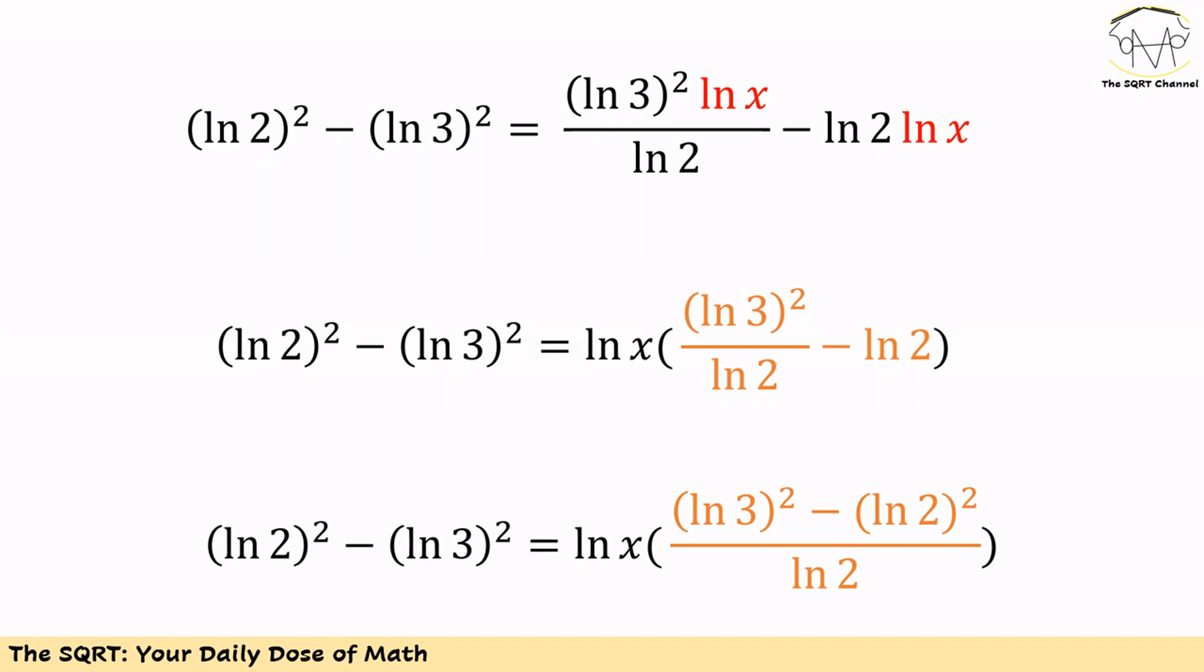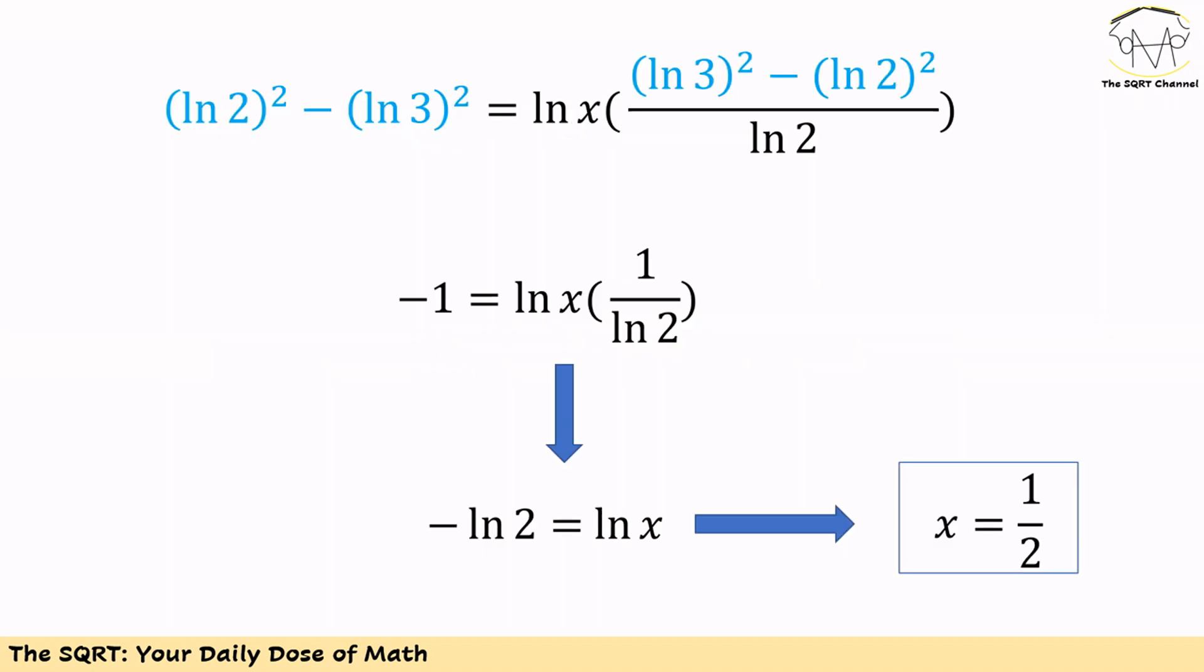Factoring out ln x and simplifying further, we reach ln 2 squared minus ln 3 squared equals ln x times ln 3 squared over ln 2.